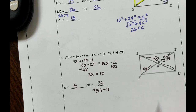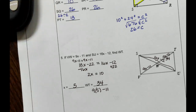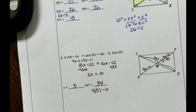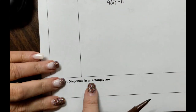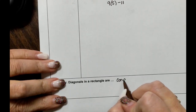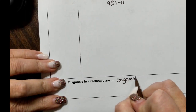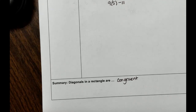To summarize: a rectangle has all the qualities of a parallelogram — opposite sides congruent and parallel, opposite angles congruent, consecutive angles supplementary, and diagonals bisecting each other. Additionally, because those four angles are right angles, the diagonals of a rectangle are congruent to each other. The key takeaway is that the diagonals in a rectangle are congruent, or equal in length.